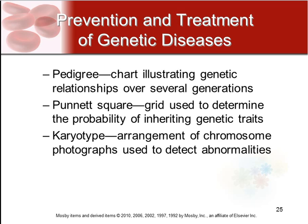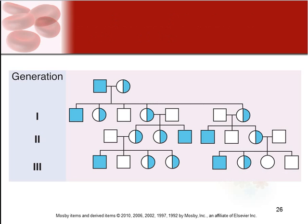There are a few ways to understand, prevent, and track genetic diseases. A pedigree is a chart illustrating genetic relationships over several generations. Punnett squares are grids used to determine the probability of inheriting a genetic trait. A karyotype is the arrangement of chromosomes, normally done in a photograph, used to assess and detect abnormalities. In a pedigree, white means normal, blue means affected, and half-and-half means carrier.